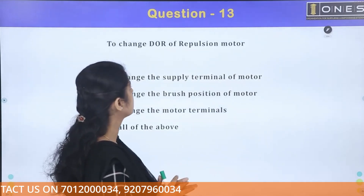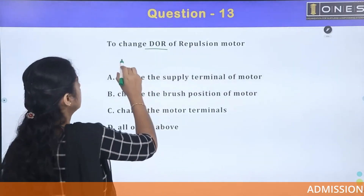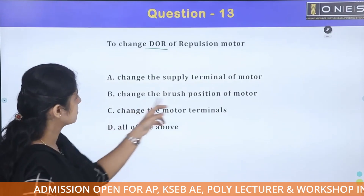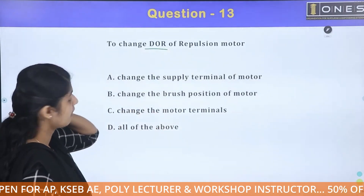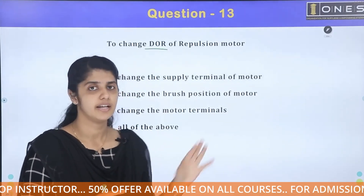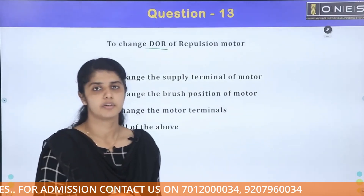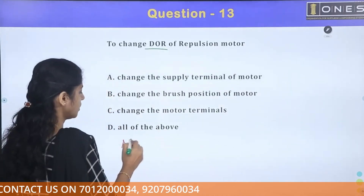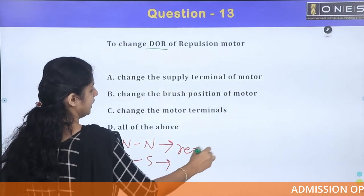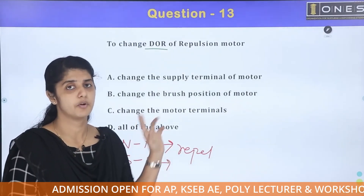The next question: how do you change the direction of rotation of a repulsion motor? Options include changing supply terminals, changing brush position, or changing motor terminals. In a repulsion motor, the working principle is based on magnetic repulsion — like poles (North-North, South-South) repel, while North-South attract. The repulsion motor operates on this repulsion principle.